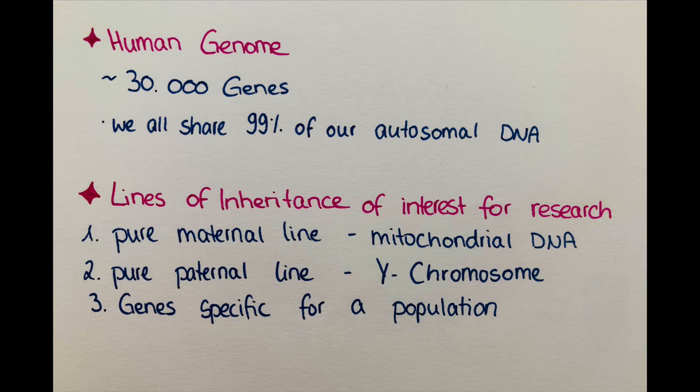This is interesting because we get our mitochondrial DNA only from our mothers. When an egg cell and a sperm cell fuse, the sperm cell only delivers its genome into the egg cell while the head and tail fall off. But the egg cell contains mitochondria — or information coding for mitochondria — so we will get those only from the mother.